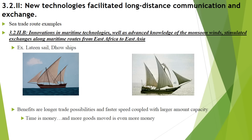The other example for 3.2.2 covers sea trade route innovations. As advanced technology and knowledge of monsoon winds stimulate exchanges along maritime routes from east Asia to east Africa, the two great examples are the lateen sail and the dhow ships. The triangular lateen sail catches wind at a more efficient level, and the dhow ship represents the construction method of the actual ships. These are the main vessels for travel and trade along the sea lanes.